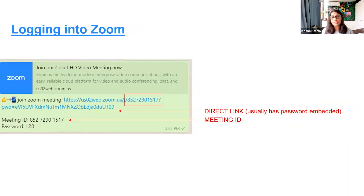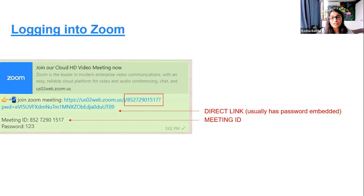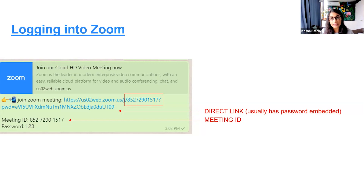When somebody sends you a meeting link — for example, via WhatsApp with a direct meeting link, meeting ID, and password — if you click the direct link you go straight into Zoom. If you log in from the Zoom app and say join a meeting, you'll need to type the meeting ID and password. The benefit of the direct link is that the password is already embedded. You can choose to enable or disable this in your account settings.